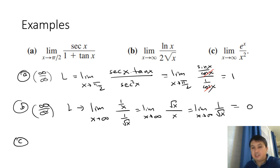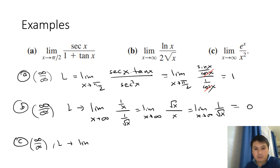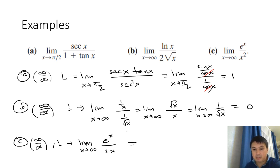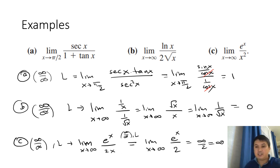Example C: lim x→∞ of eˣ/x². Both go to infinity, so it's ∞/∞. Applying L'Hôpital gives eˣ/(2x), still ∞/∞. Applying L'Hôpital again gives eˣ/2. As x→∞, the numerator goes to infinity and the denominator is 2, so this is infinite/2 = ∞. The limit is ∞.